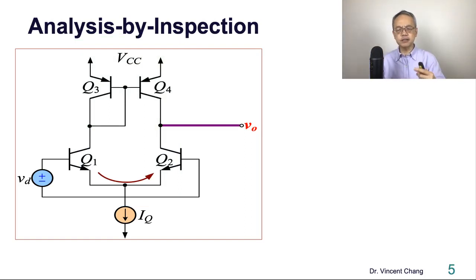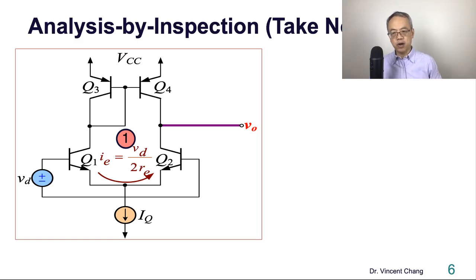Let's try the analysis by inspection to solve this circuit. First step, you should be very familiar with this. Get the total emitter resistance, 2RE, and then apply Ohm's law and get the AC current starting from 9 o'clock and then passing 6 to 3 o'clock. The first step: VD over 2RE. I encourage you to pause and take note. This is step 1, IE.